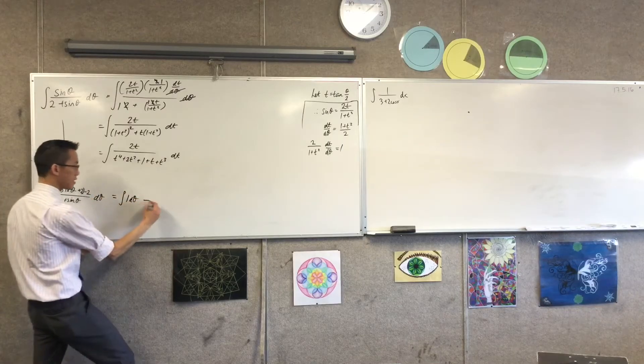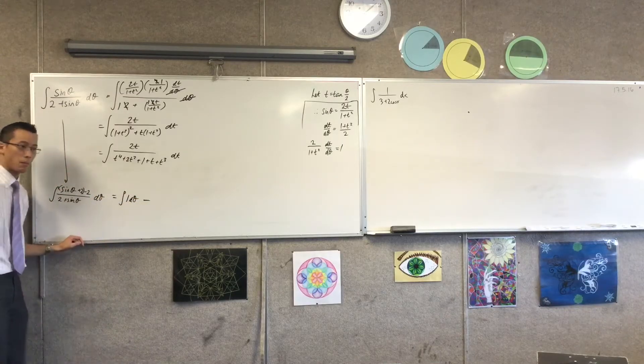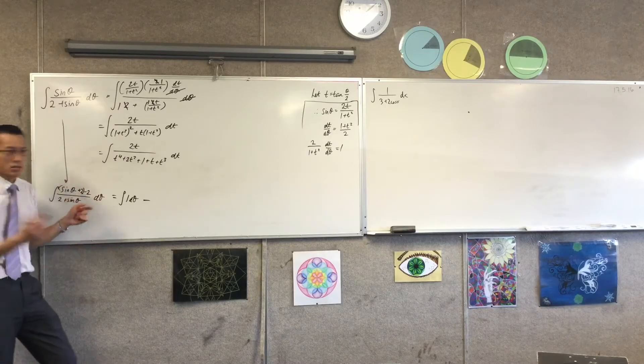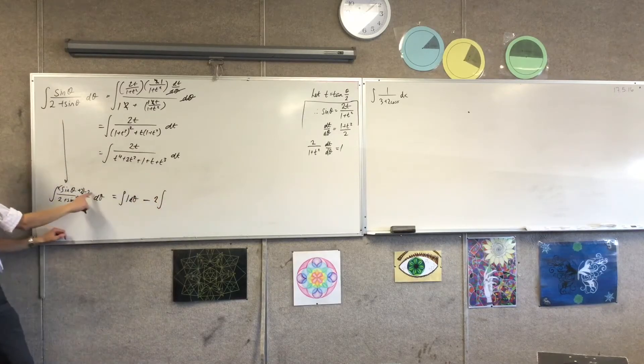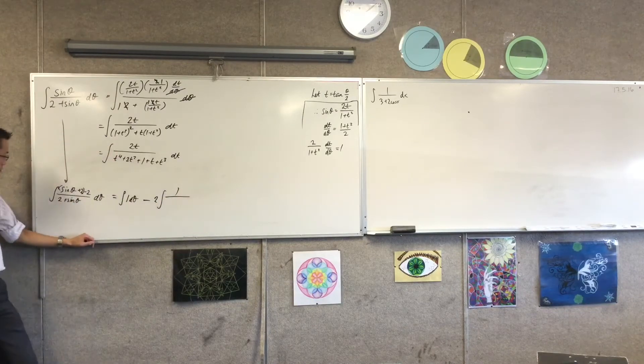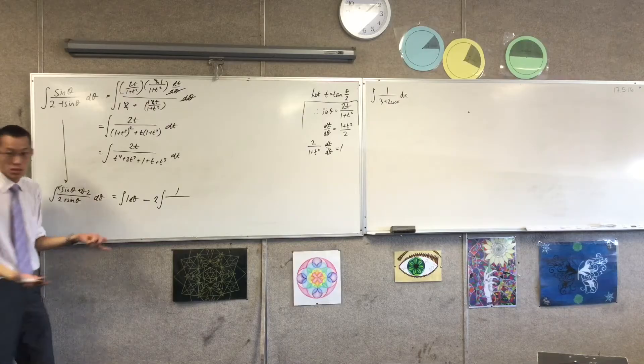Then what you get over here is take away, take away what? I can take out that 2 if I want. Integral of what gets left there is a 1 on 2 plus sine theta. The denominator stays the same.